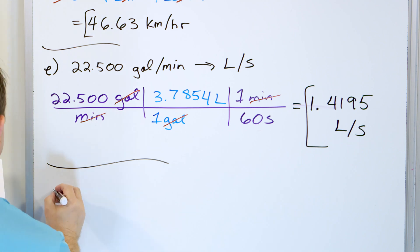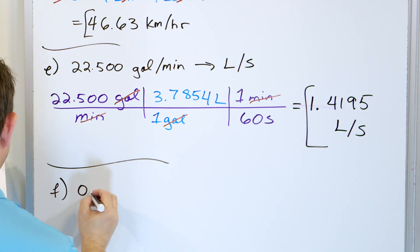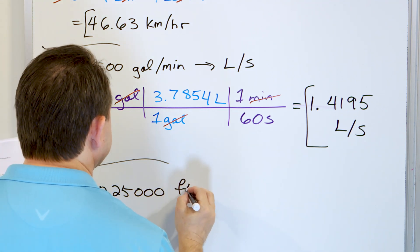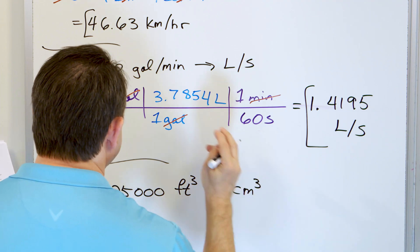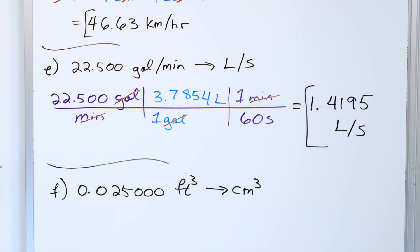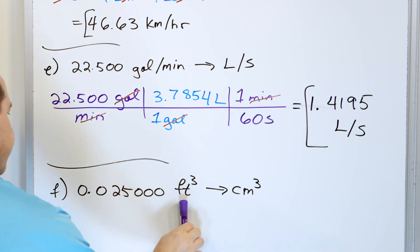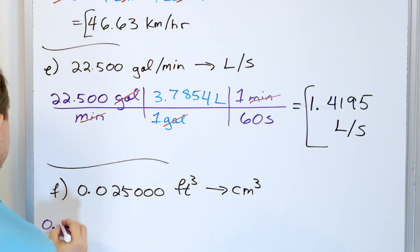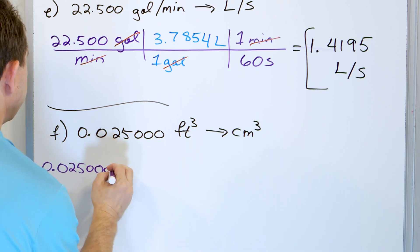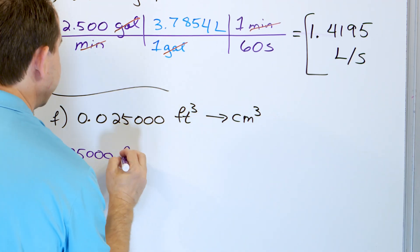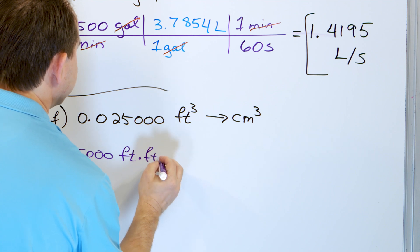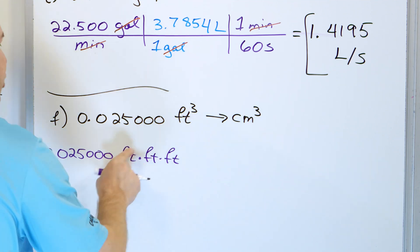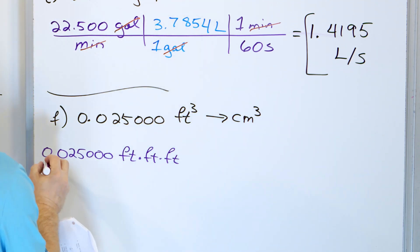This will be the last part of this problem, part F: convert 0.025000 cubic feet into cubic centimeters. This is a unit of volume, so you have to be careful. Instead of writing it as feet cubed, write it as feet times feet times feet — because that's what a volume is: length times width times height. So feet cubed is really three feet multiplied together.